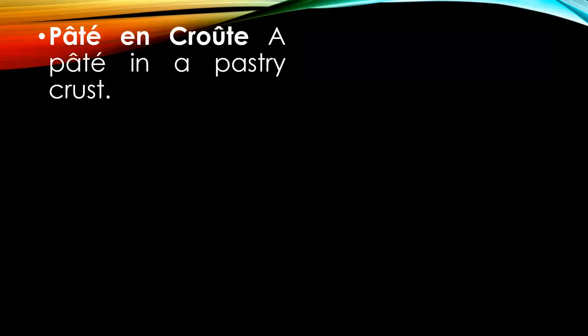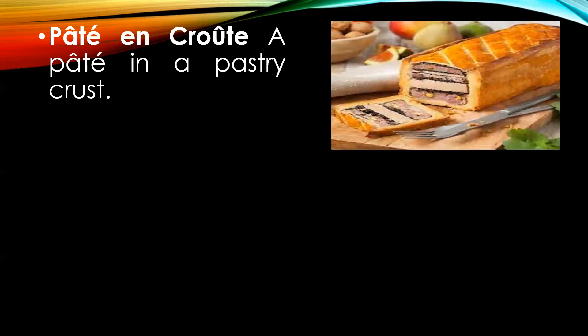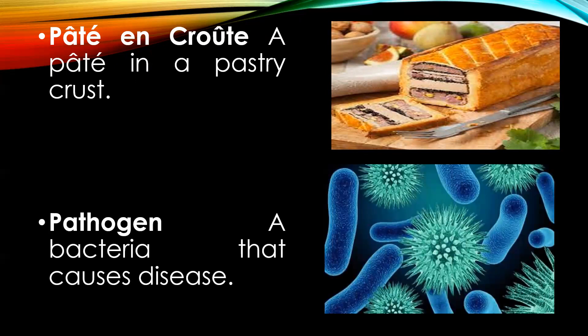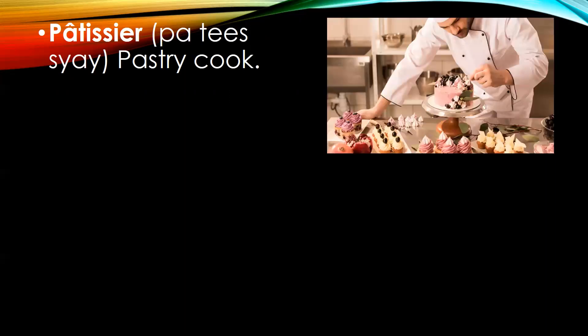The next term is pâté en croûte, which translated in English means a pastry crust, and also means forcemeat baked in a crust. Pathogen is a bacteria responsible for causing diseases. Patissière in English means a pastry cook.